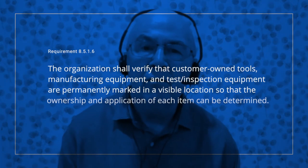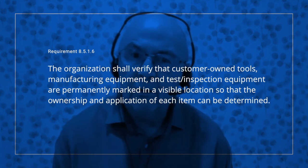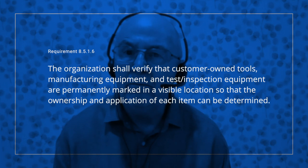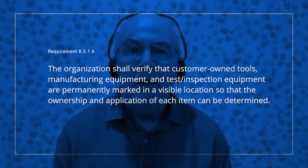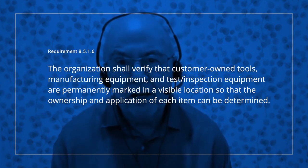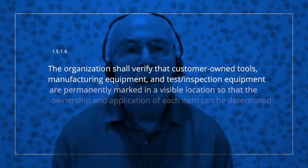The colour coding that they introduced can also reduce the risk of mixing left and right hand tools, which is good from an error proofing perspective. Auditors should verify during an audit of tooling that the ownership of tooling is clear. Where tooling is owned by the customer, IATF requirement 8.5.1.6 clearly states the organisation shall verify that customer-owned tools, manufacturing equipment and test and inspection equipment are permanently marked in a visible location so that the ownership and application of each item can be clearly determined. In this audit, the auditor should follow up to verify that requirement has been effectively met.